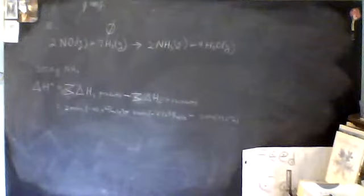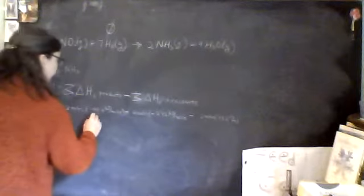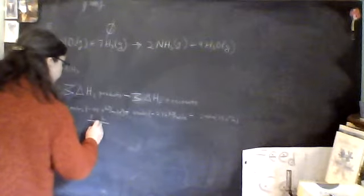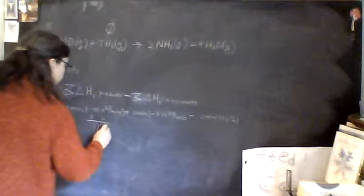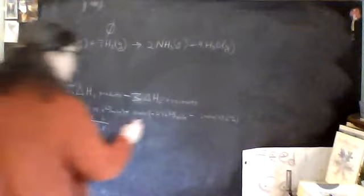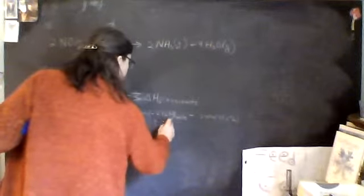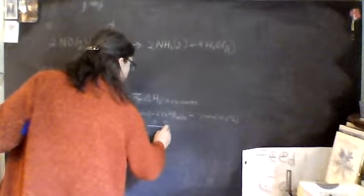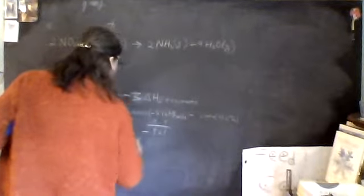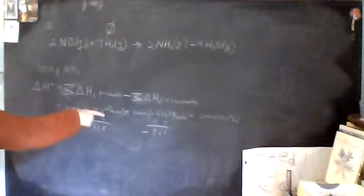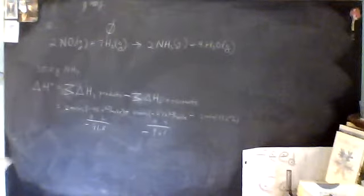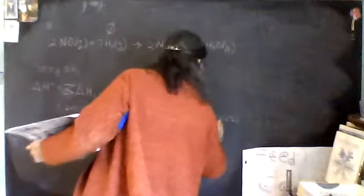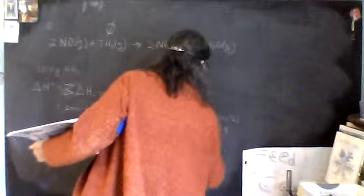So we have negative 91.8 plus negative 968 minus 66.4.